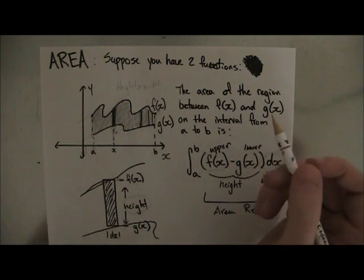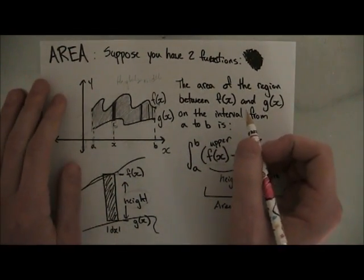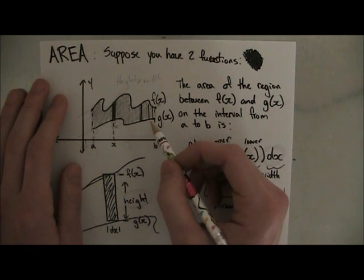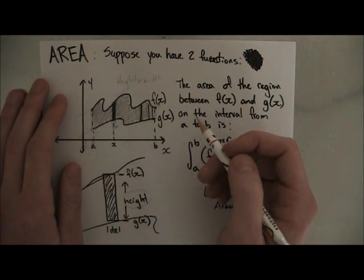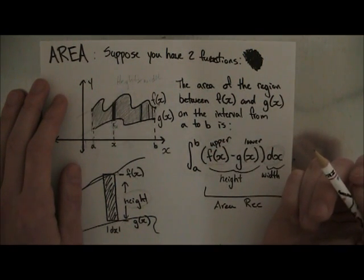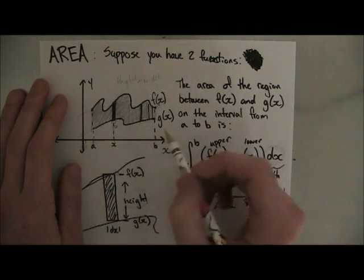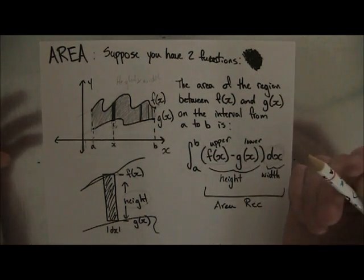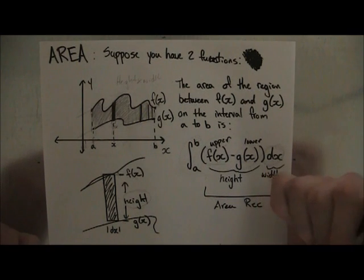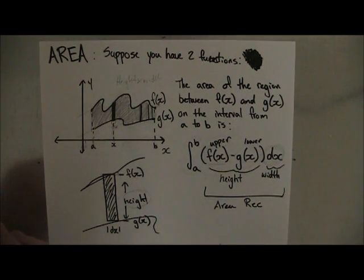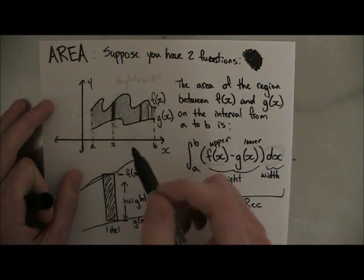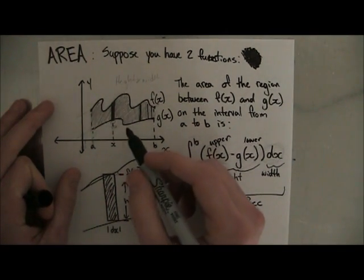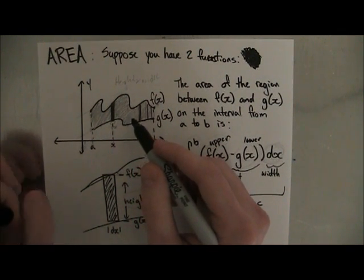If we want to calculate this area, we can't really do height times width like we would do for a rectangle, or pi r squared for a circle. There's no special formula for different functions because all functions can be different. What we do is when you take an integral, an integral actually makes a rectangle - a very small rectangle between two points.